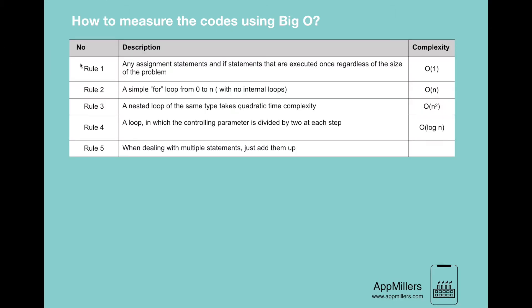In this list, the first rule is any assignment statements and if statements that are executed once regardless of size of the problem take complexity of O(1).